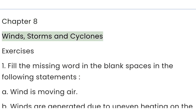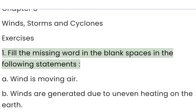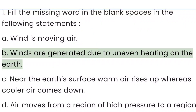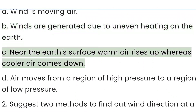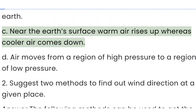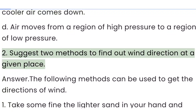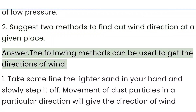Chapter 8: Winds, Storms and Cyclones — Exercises. Question 1: Fill in the missing word in the blank spaces. (a) Wind is moving air. (b) Winds are generated due to uneven heating on the earth. (c) Near the earth's surface, warm air rises up whereas cooler air comes down. (d) Air moves from a region of high pressure to a region of low pressure.